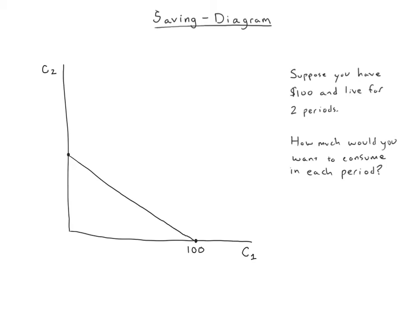Now we have to think about how much could I consume in period two if I saved all my money? Well, if you saved the $100, you'd have $100 in period two, but if you save, you also get paid interest. So the maximum C2 is going to depend on the interest rate. We're going to call the interest rate R.